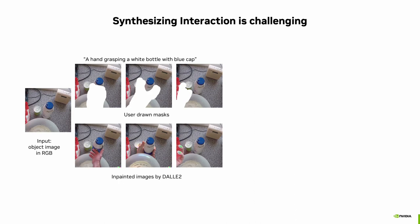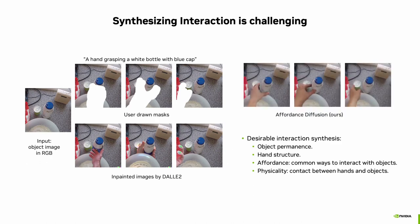These are very challenging tasks. A general image synthesis system will struggle on this task even when provided with carefully drawn masks and a prompt. In this work, we aim to build an automatic interaction synthesis method that can retain the object identity, manifest hand structure, follow common ways to interact with it, and satisfy physicality like contact information.